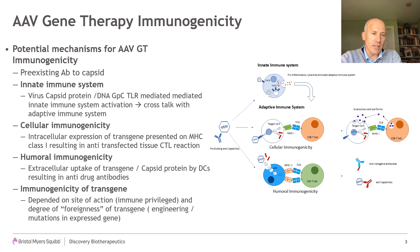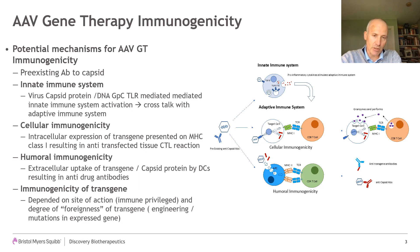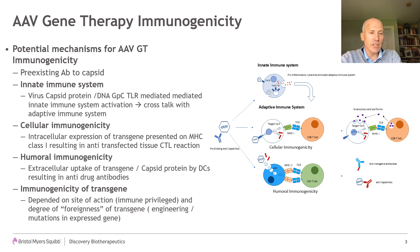The cellular immunogenicity, or anti-humoral immunogenicity, results from intracellular expression of the transgene and recognition by T cells, which can result in a CTL reaction and destruction of the tissues expressing this transgene. Class II-mediated immune responses to the transgene — although probably only likely for engineered transgene products — can result in anti-drug antibodies to this transgene product.